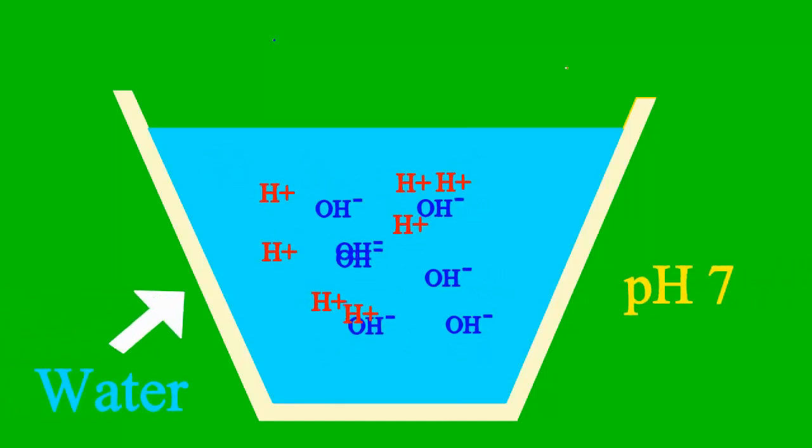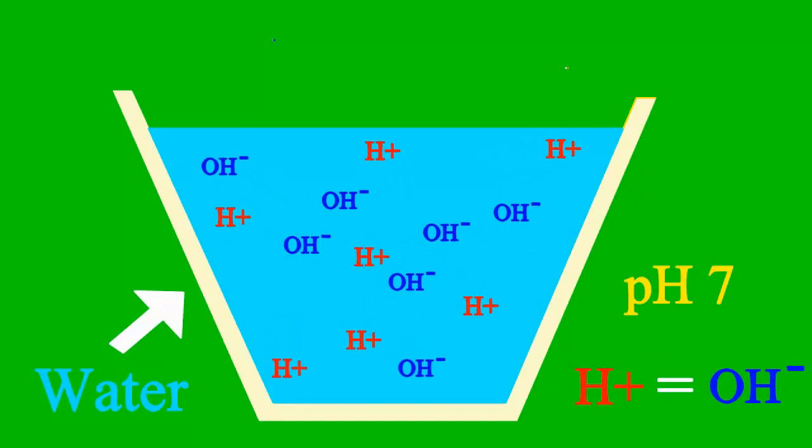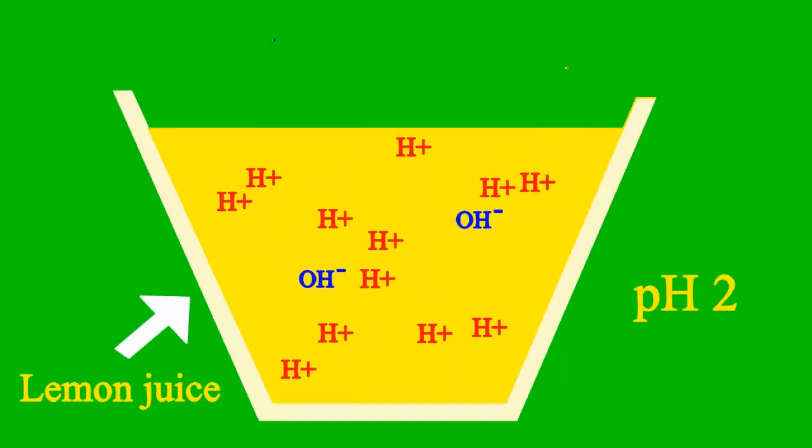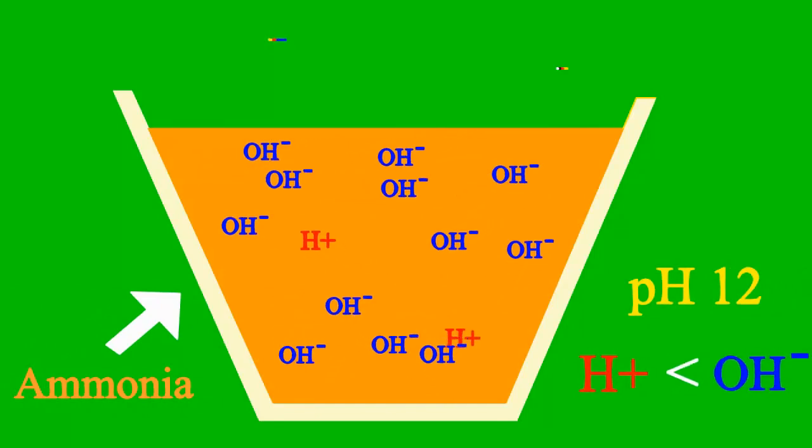When the pH is 7, then it's a case where the sample is neither an acid nor base. But less than 7, it's an acid, we say. More than 7, it's a base all the way.